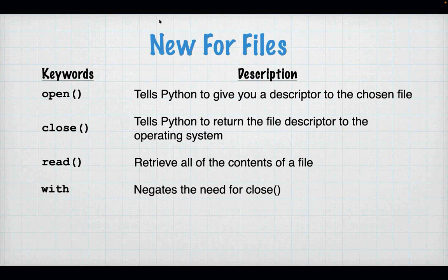So we've got some new keywords and some new concepts. The keywords — well, `with` is a keyword — but we have some new functions: open, close, read. Open just tells Python to get a file descriptor. Close tells Python to return the file descriptor to the operating system. Read tells us to get all the contents from a file. And `with` is a keyword that negates the need for close.